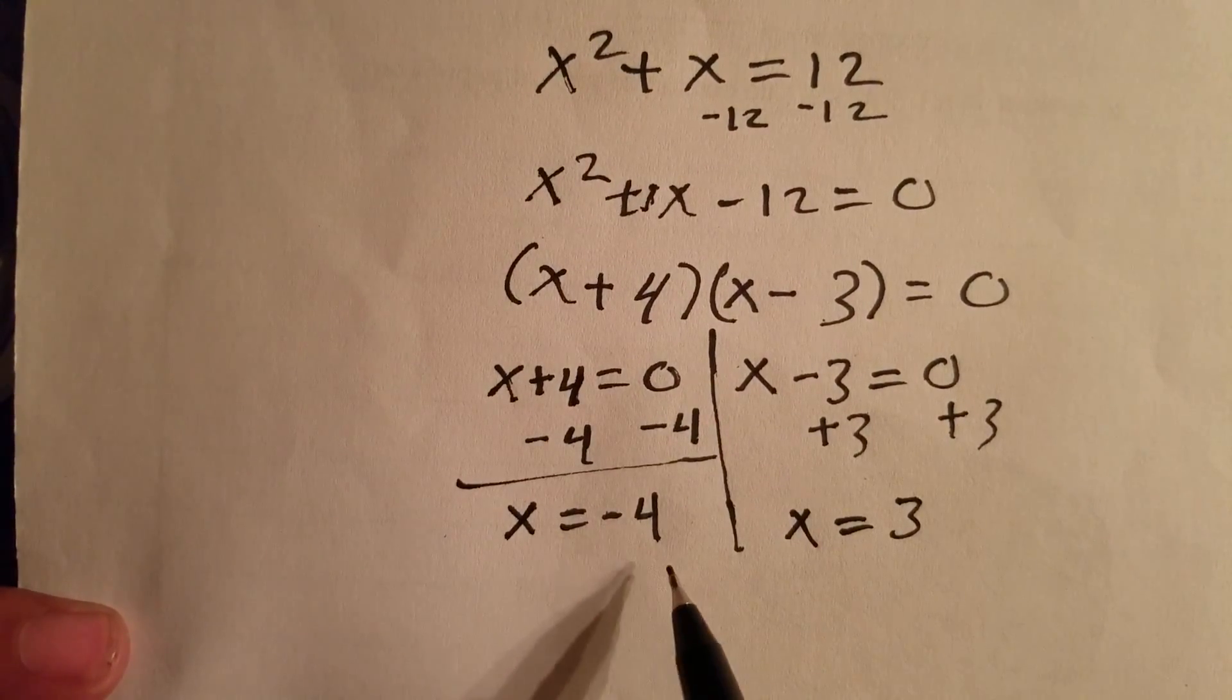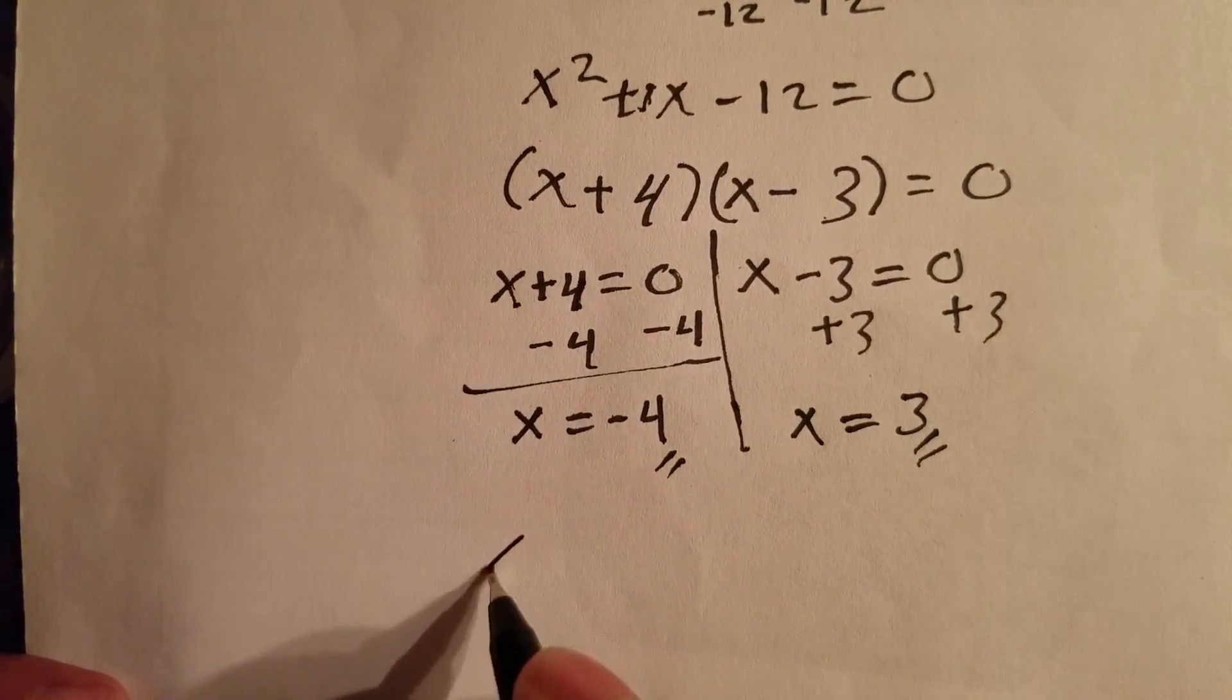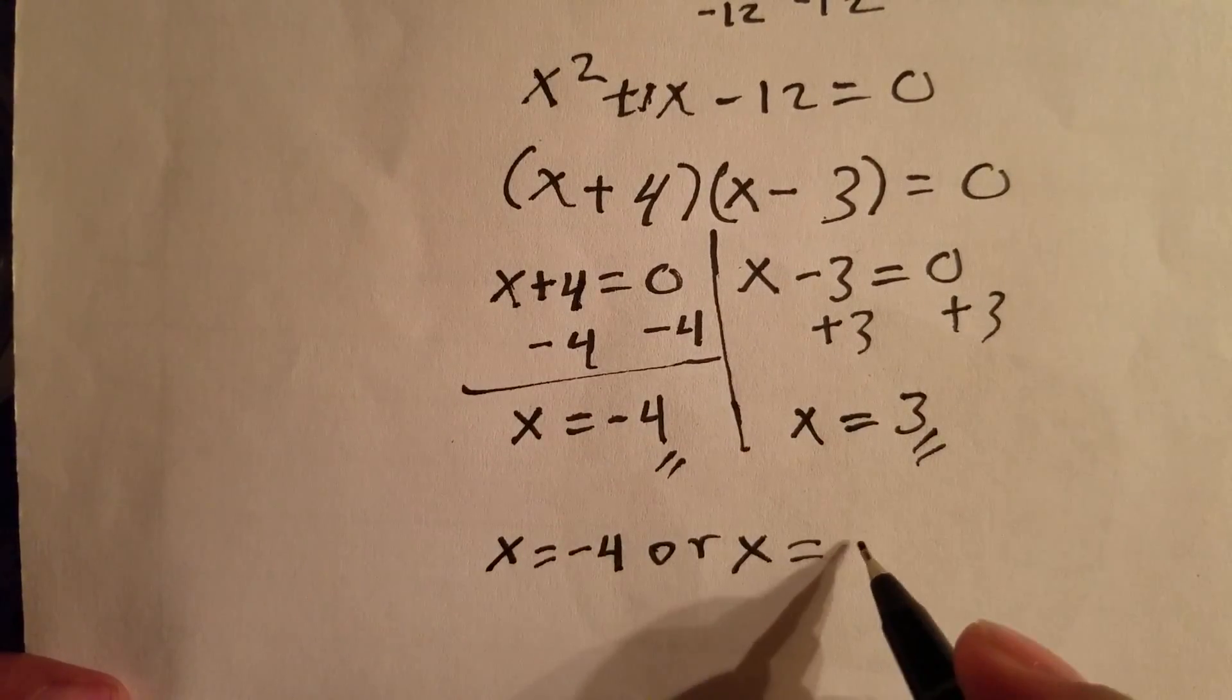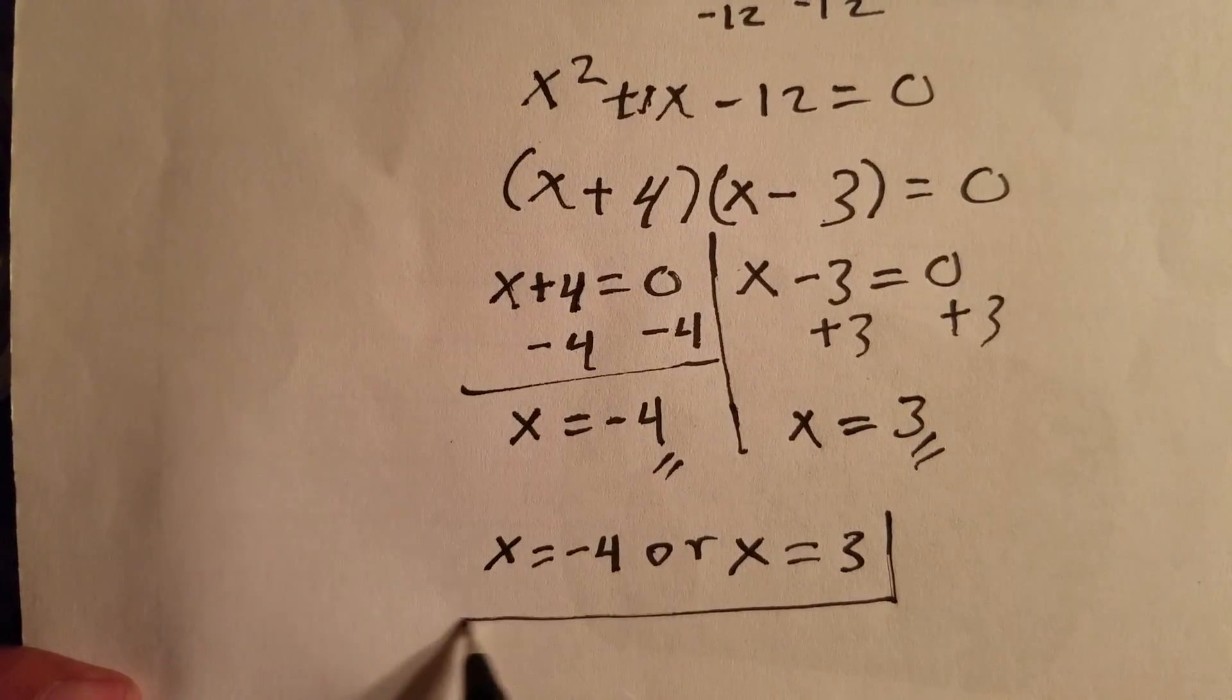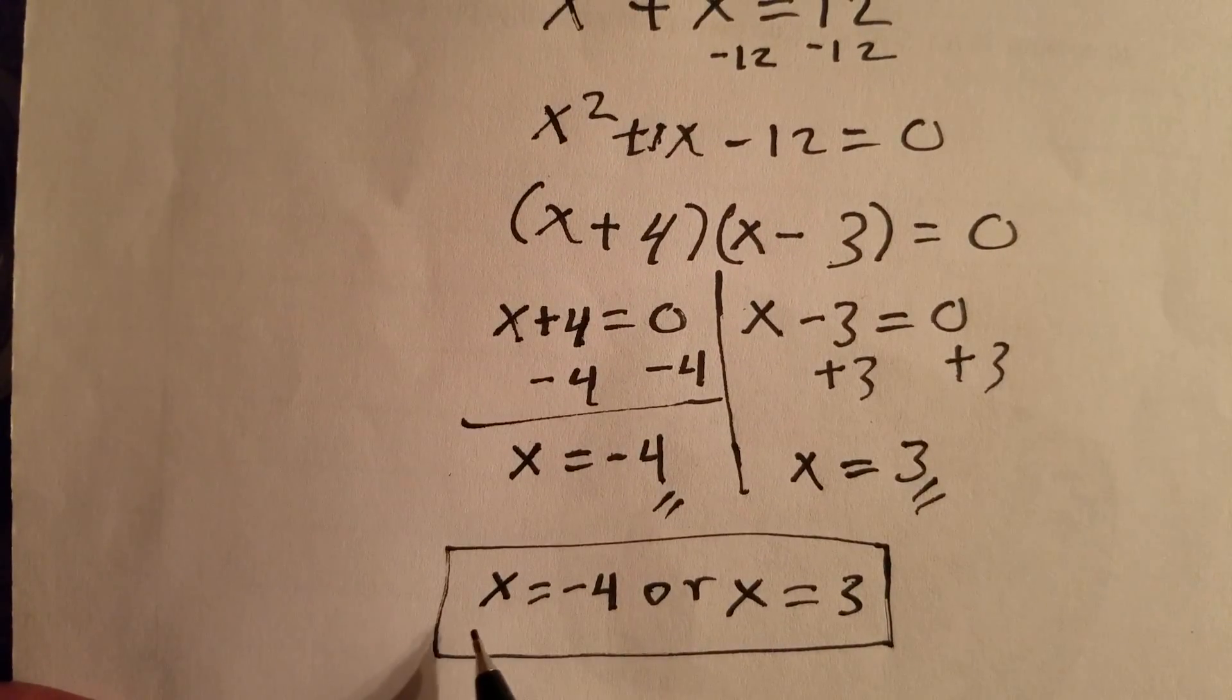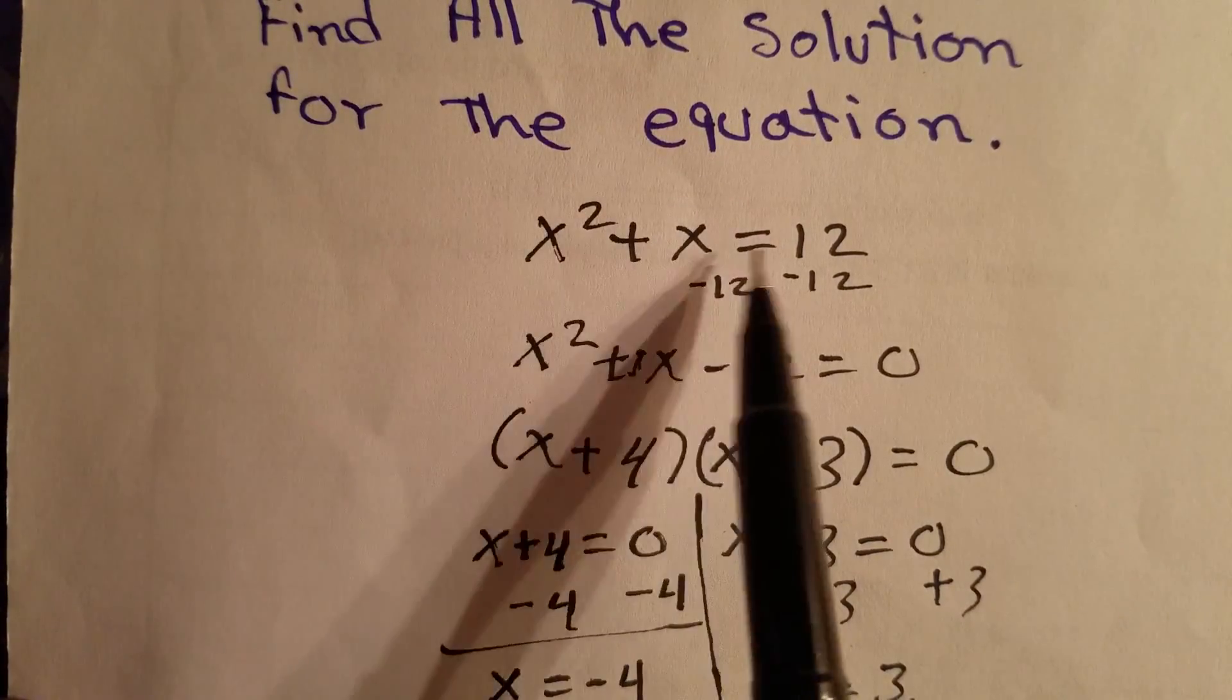So this is the final answer: x = -4 or x = 3. If you want to check if this is all right, you can just plug x = -4 or x = 3 into the original equation and you're gonna see this side equals this side.